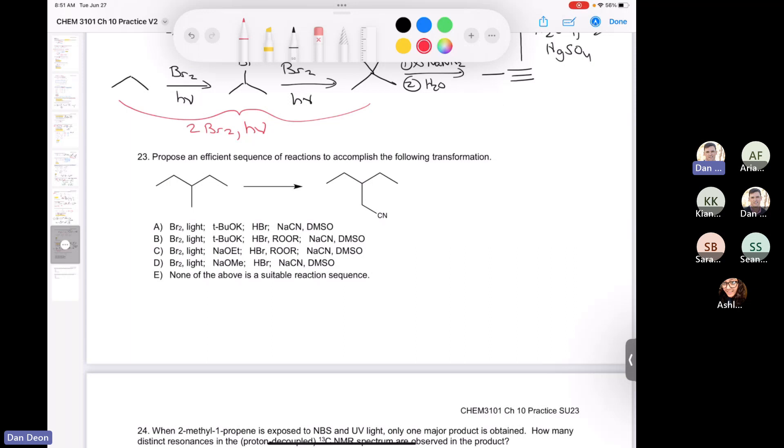If you had the alkyl halide, right, so you would want to, if you had this compound, if you had the bromine out here, then you could just treat it with sodium cyanide, right? And that would just do an SN2. So then the question becomes, well, how do we go from here to here? Well, the only possibility we have for the first step is to treat it with bromine and light. Let's try that. So if we treat this with bromine and light, that's going to make a tertiary alkyl halide like this.